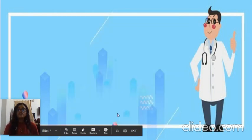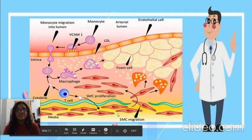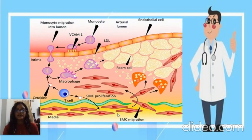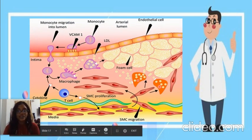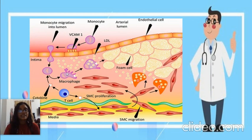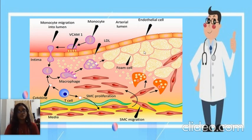This small diagram describes a complete summary of the pathogenesis. Here you can see the smooth muscle cell migration and proliferation, the entry of the monocytes, the ingestion by macrophages of the oxidized LDL, and the formation of foam cells.